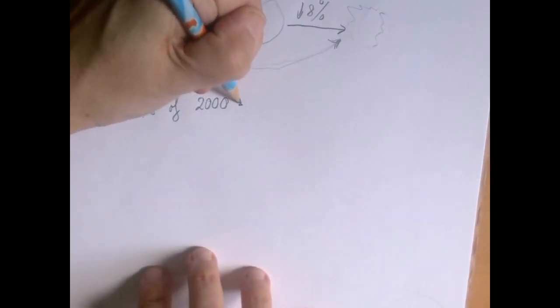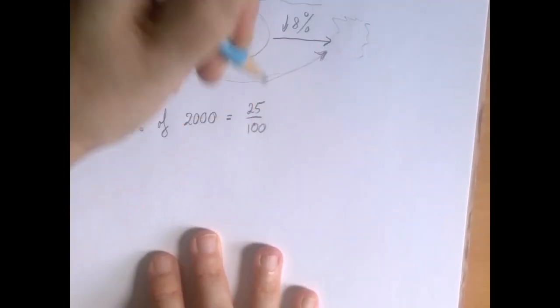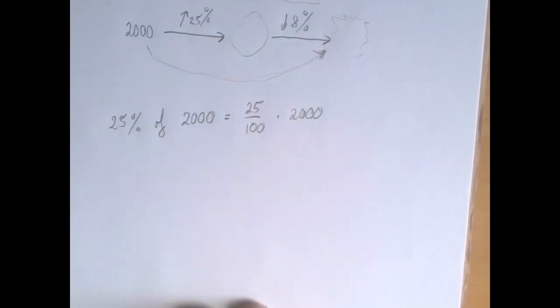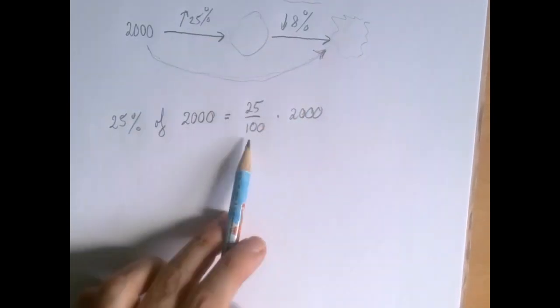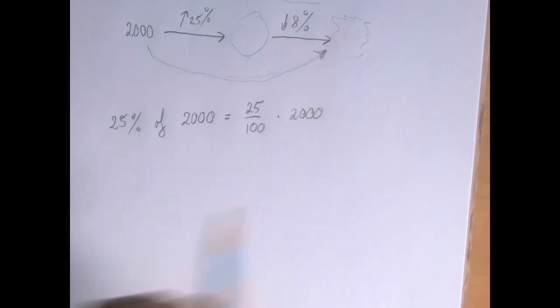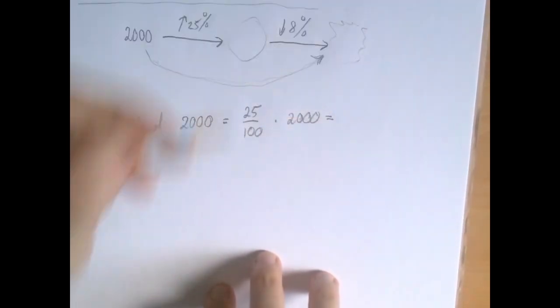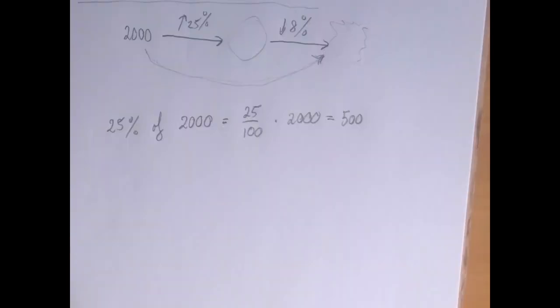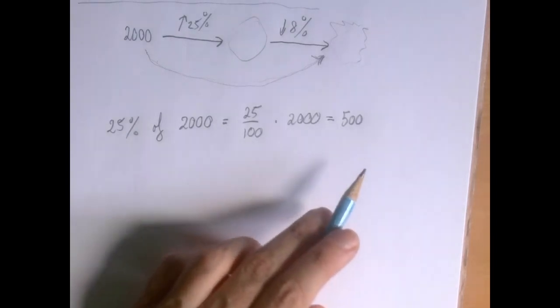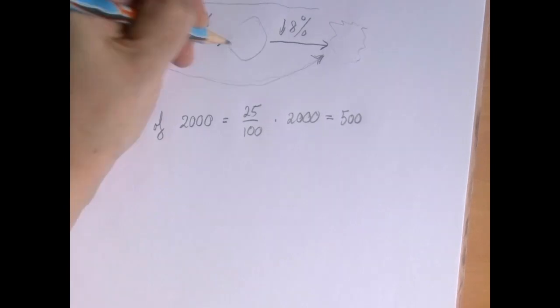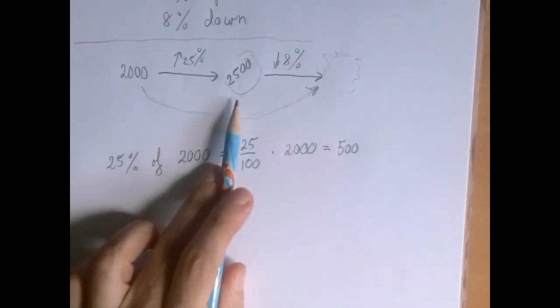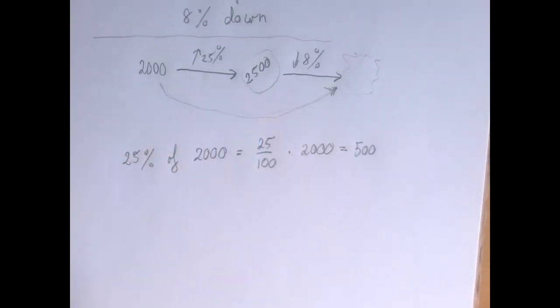Well, that's 25 over 100. I hope we all know that this is a quarter, right? If we simplify it, we get 1 over 4, and 1 fourth of 2,000 is just 500. So we went from 2,000 to, well, not 500. That was just the increase. We went to 2,500. So this intermediary number is 2,500.